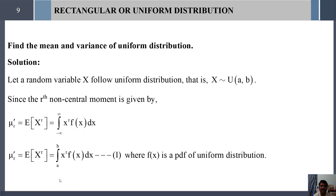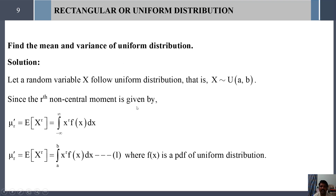Next we are going to find the mean and variance of uniform distribution using non-central moments, mu_r'. If we substitute r = 1, mu_1' gives the mean, which equals E(X). For a continuous random variable, mu_r' = integral from a to b of x^r · f(x) dx. Substituting r = 1, mu_1' = integral from a to b of x · f(x) dx.